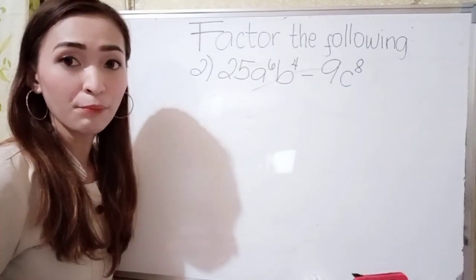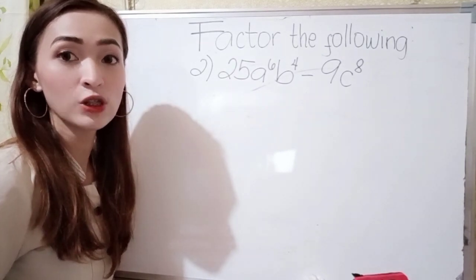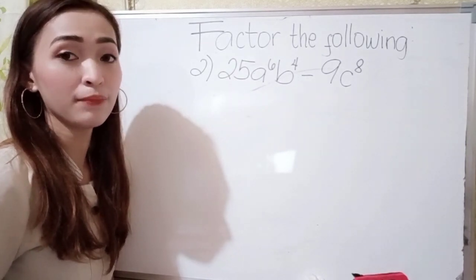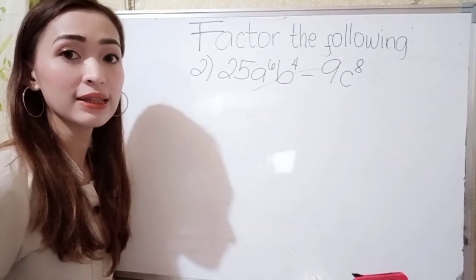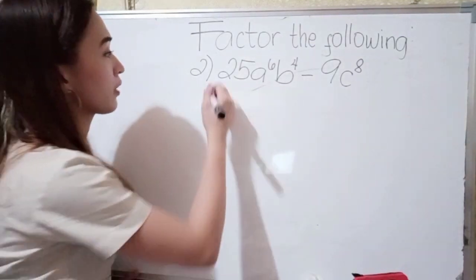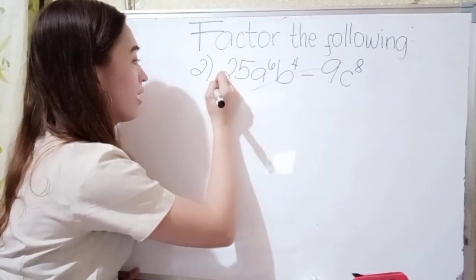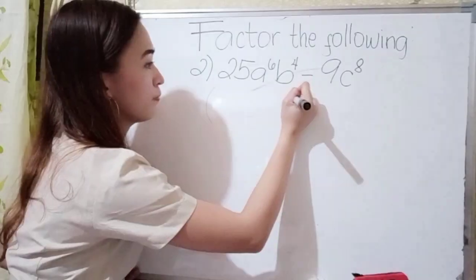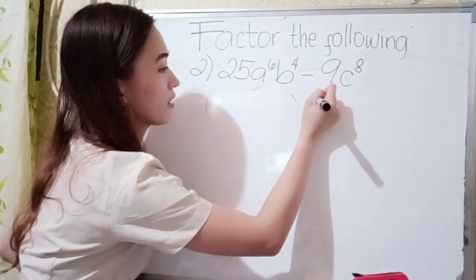For number 2, we have 25a raised to the 6th power, b to the 4th power, minus 9c raised to the 8th power. So let's put a grouping symbol here.